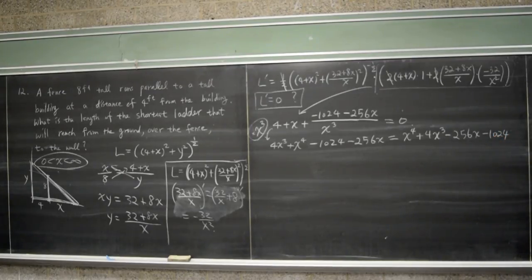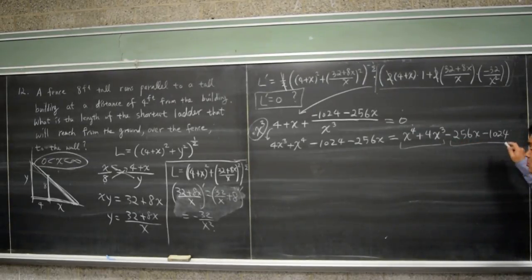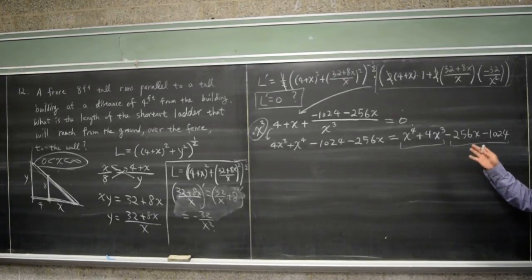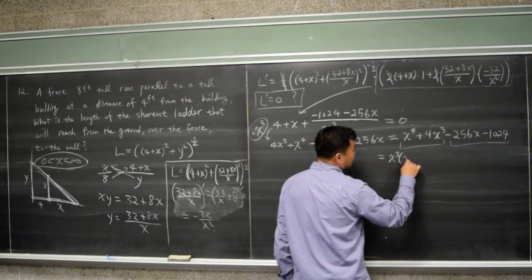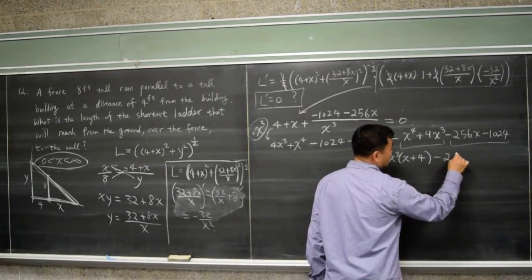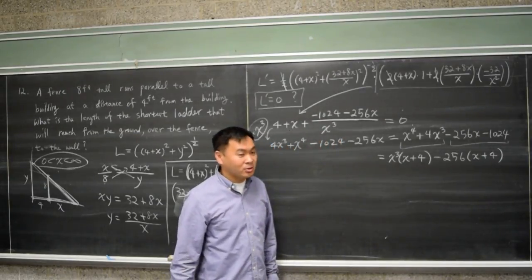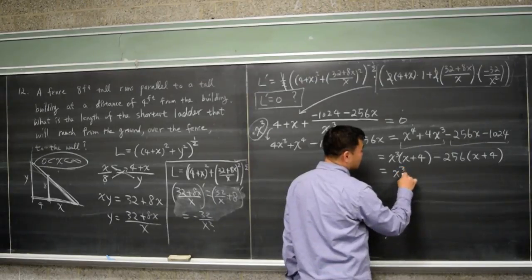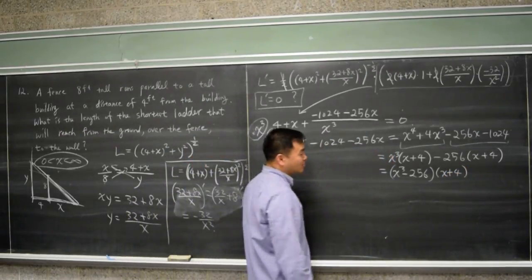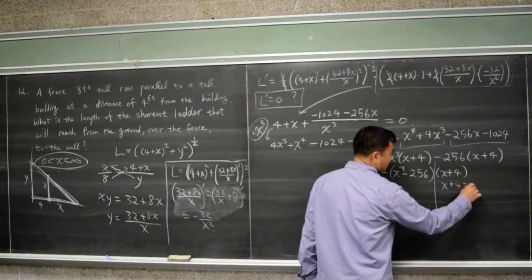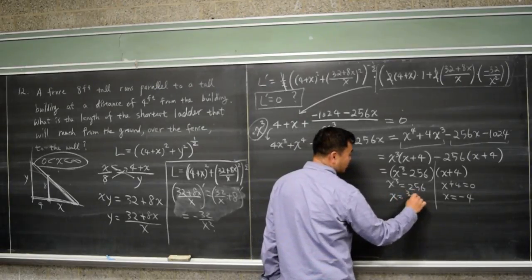That's a quartic equation, which we'd normally not know how to solve — unless we can factor by grouping. Factoring the first two terms: x³(x + 4), and the last two terms: −256(x + 4). Magically we have (x + 4) as a common factor, giving (x + 4)(x³ − 256) = 0. So x = −4, which we reject since x > 0, or x³ = 256, meaning x = ∛256.